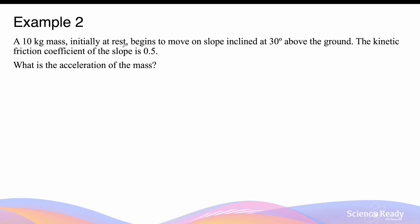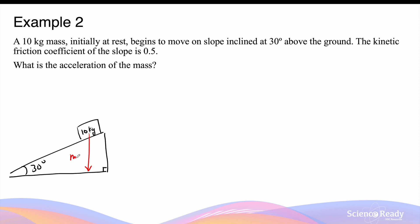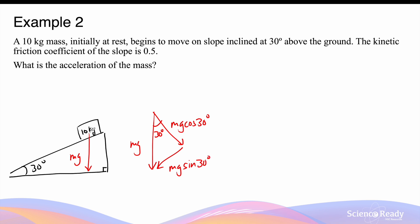A 10 kg mass, initially at rest, begins to move on a slope inclined at 30 degrees above the ground. Let's draw a free body diagram. The angle is 30 degrees and the mass is 10 kg. We have the weight force Mg going down, resolved into Mg cos theta perpendicular to the slope and Mg sin theta along the slope. We also have the normal force perpendicular to the surface and kinetic friction acting up the slope. The normal force minus Mg cos theta gives a net force of zero, so normal force equals Mg cos theta.